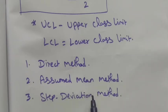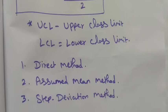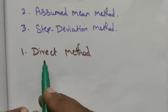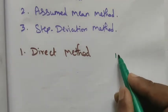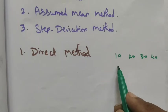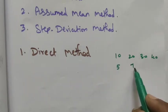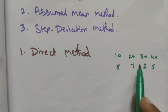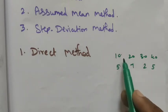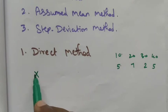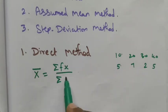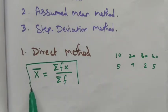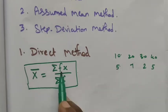We can use any one of these methods to find the arithmetic mean. In the Direct Method, data values are given directly — for example, 10, 20, 30, 40 — and the corresponding frequencies are 10, 7, 2, 5. By directly multiplying these two values, we can find the arithmetic mean. The formula is: x̄ = Σfx / Σf, where f is the frequency.